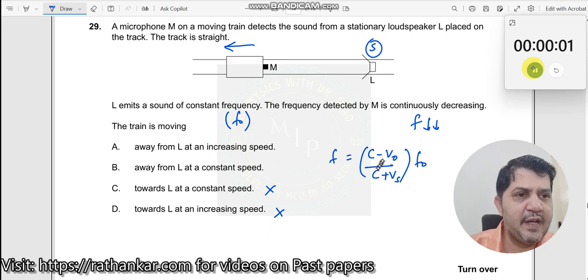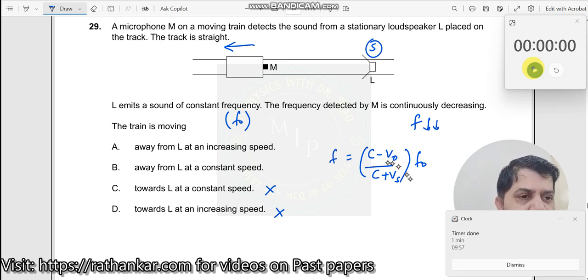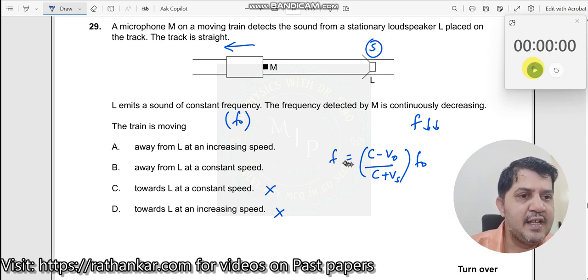If it is moving at constant speed, what will happen? V observer will have a constant value, and the frequency will also be a reduced value which will be constant. It will not decrease forever.